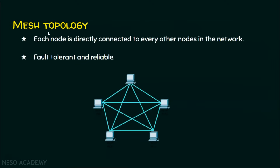The last topology of the session is mesh topology. In mesh topology, each node is directly connected to every other node in the network. If there are five nodes, each node has a link to all other nodes. This provides 100% fault tolerance and reliability — if one link fails, the computer has many other paths to reach the destination.